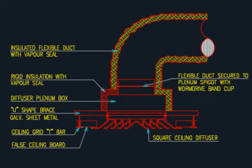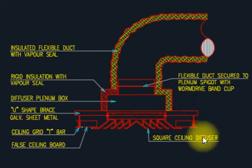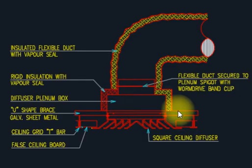So our topic today is: what is the difference between a diffuser and a register? We have two types of HVAC grids like that — we call them diffuser and register. So what is the difference between a diffuser and a register? I will explain it.